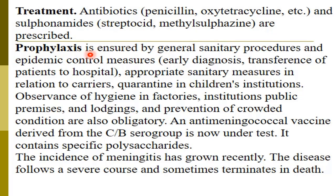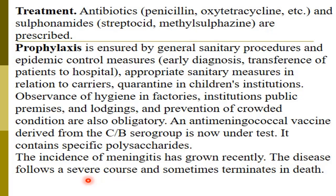As prophylaxis, prevention is ensured by general sanitary procedures and epidemic control measures, early diagnosis, transfer of patients to hospital, and appropriate sanitary measures in relation to carriers. Quarantine in children's institutions, observance of hygiene in factories and public premises, and prevention of overcrowding are obligatory. An anti-meningococcal vaccine derived from the CB serogroup containing specific polysaccharides is now under testing.